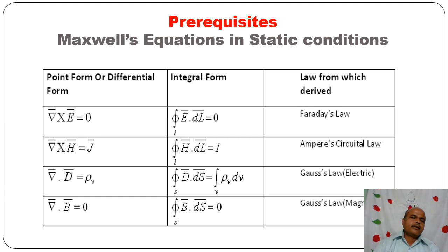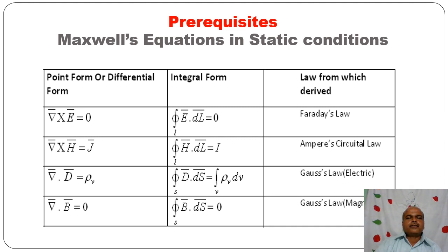Maxwell's equations in static conditions were studied previously. In point form: del × E = 0 (Faraday's law), del × H = J (Ampere's circuital law), del · D = ρᵥ (Gauss's law, Maxwell's first equation), and del · B = 0. In time-varying fields: curl of E = −∂B/∂t (Faraday's law), curl of H = J + ∂D/∂t (Ampere's circuital law), del · D = ρᵥ (Gauss's law), and del · B = 0 (Gauss's law for magnetostatics). These integral forms are derived using the Divergence theorem and Stokes' theorem.